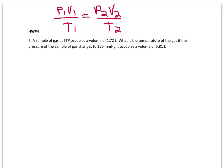So we know that this is a combined gas law problem because they give us a lot of information. They give us STP, which is important, the 1.72 liters, the 250 millimeters of mercury, and then the 5.81 liters.